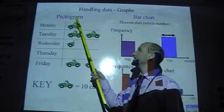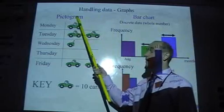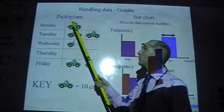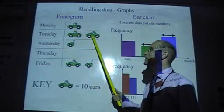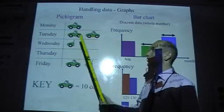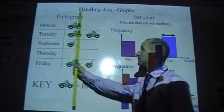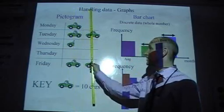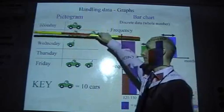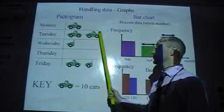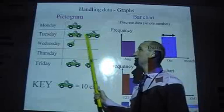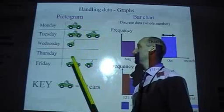First, a nice easy one, pictogram. Key points for a pictogram are all your pictures must be the same size. And one thing a lot of people forget to do is to make sure all your pictures are in neat columns and rows. So you should think your pictures as being drawn inside a nice grid.